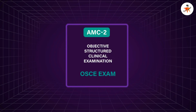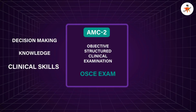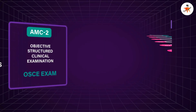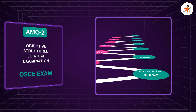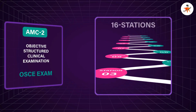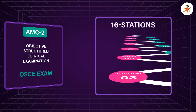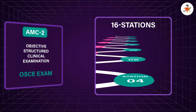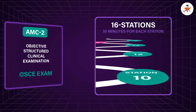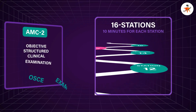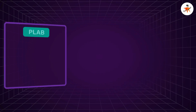AMC Part 2 is an OSCE-based exam evaluating a candidate's decision making, knowledge, and clinical skills for different medical situations. This exam contains a total of 16 stations and you will be required to go to each station. Out of these 16, 10 stations are graded and you will have 10 minutes for each station.